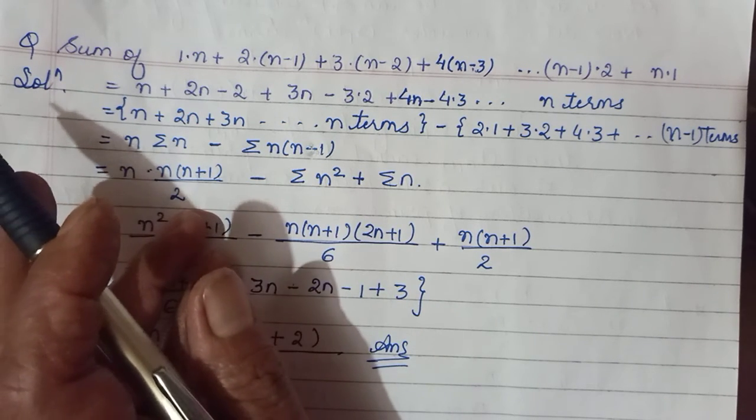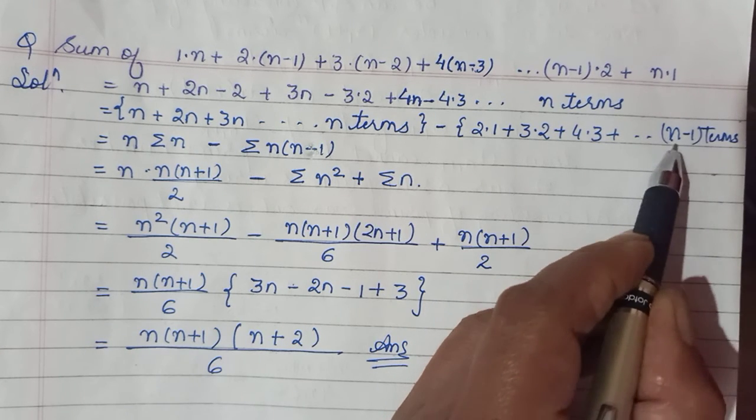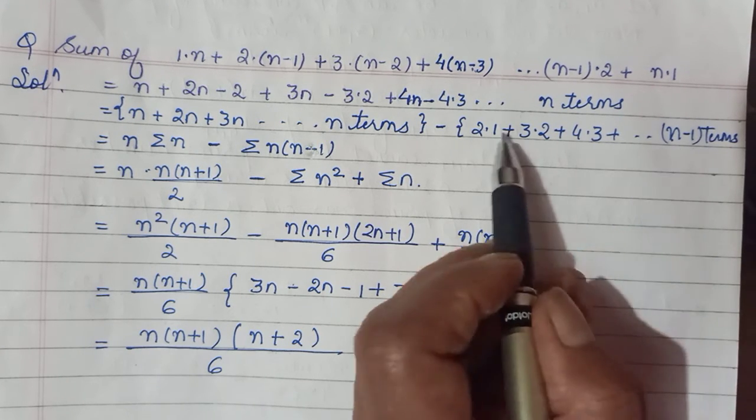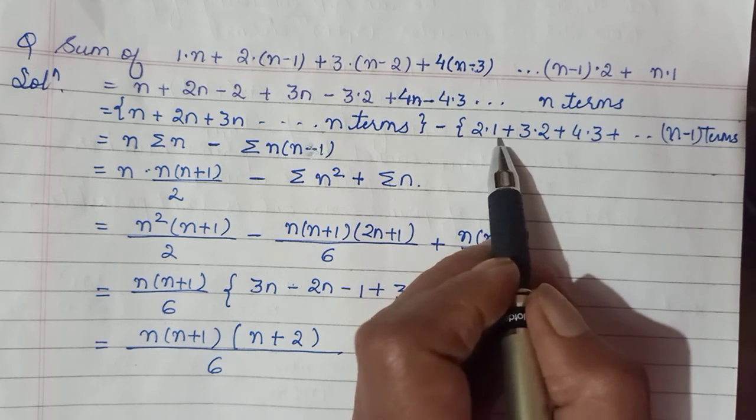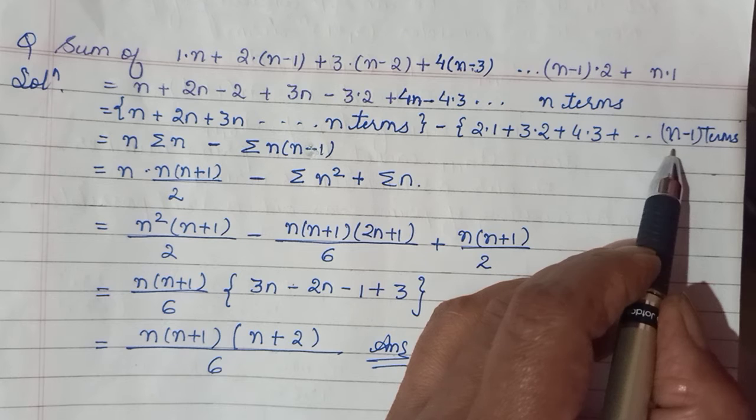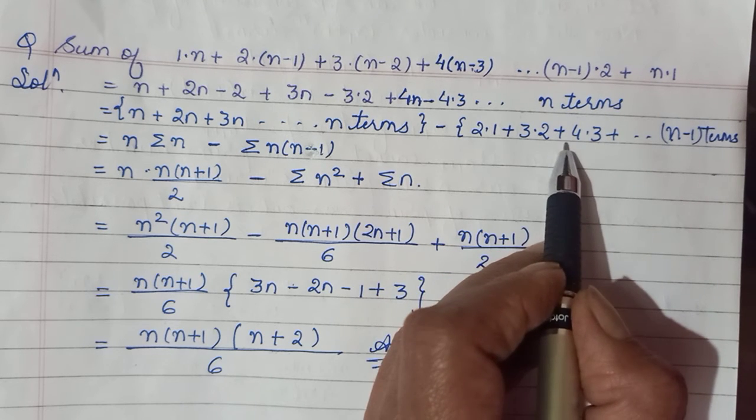Minus 2 negative wale terms hamein sirf n-1 se mil rahe. Ismein koi minus wala nahi tha. That is what you have to focus and observe. So there are n-1 terms of this kind.